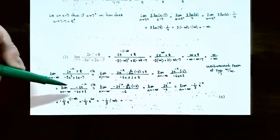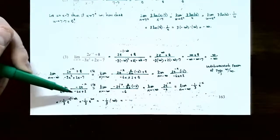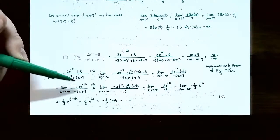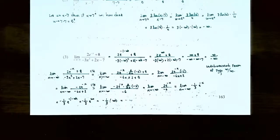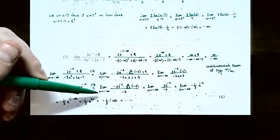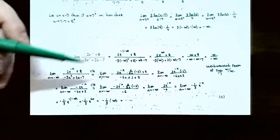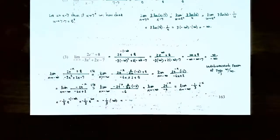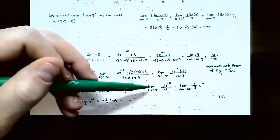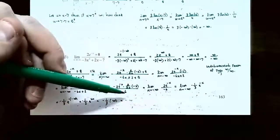The limit as x → −∞ of −2e^(−x)/(−6x + 2) still gives an indeterminate form of type ∞/∞, because the denominator −6·(−∞) + 2 = +∞ and the numerator −2·e^(+∞) = −∞. So we apply L'Hôpital's Rule again. The derivative of −2e^(−x) is −2e^(−x) times d/dx(−x) = −2e^(−x)·(−1) = 2e^(−x). The derivative of −6x + 2 is −6. So we now have the limit as x approaches −∞ of 2e^(−x) / (−6).